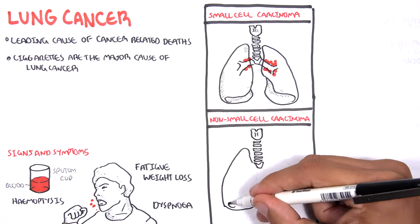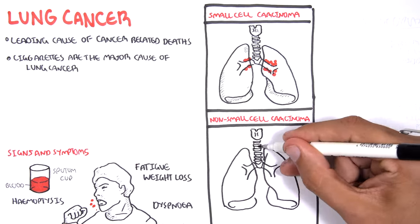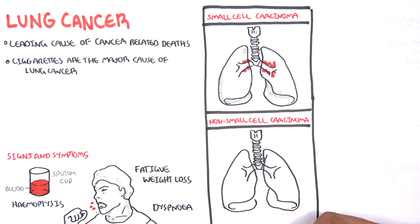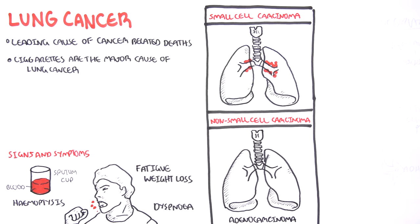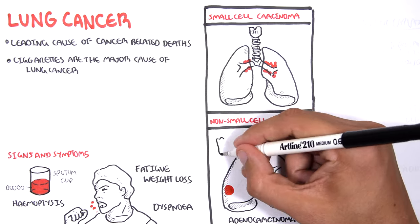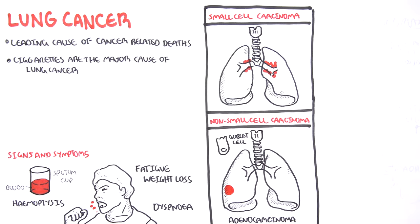Now looking at non-small cell carcinoma, there are three types. Adenocarcinoma is the most common type of lung cancer and involves gland cells such as goblet cells. Adenocarcinoma grows in the peripheral lung tissue.